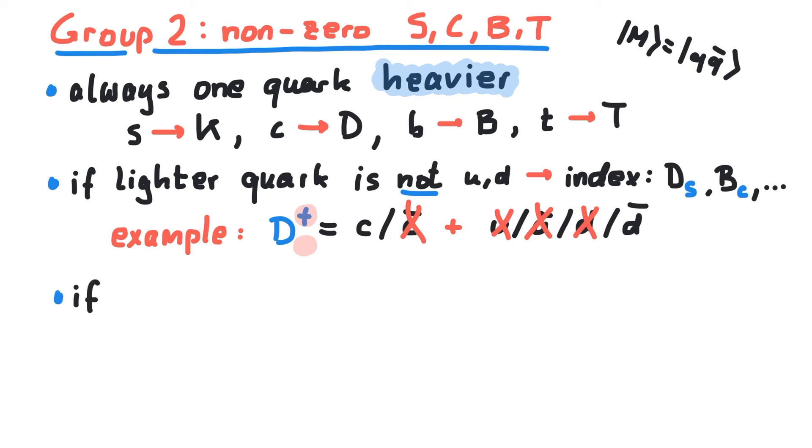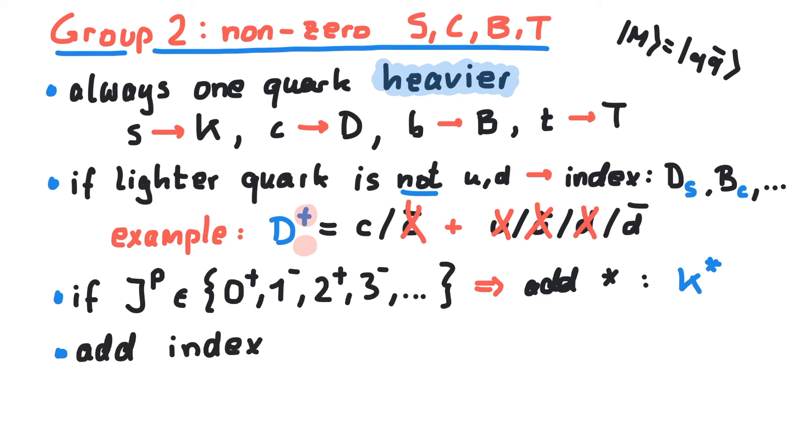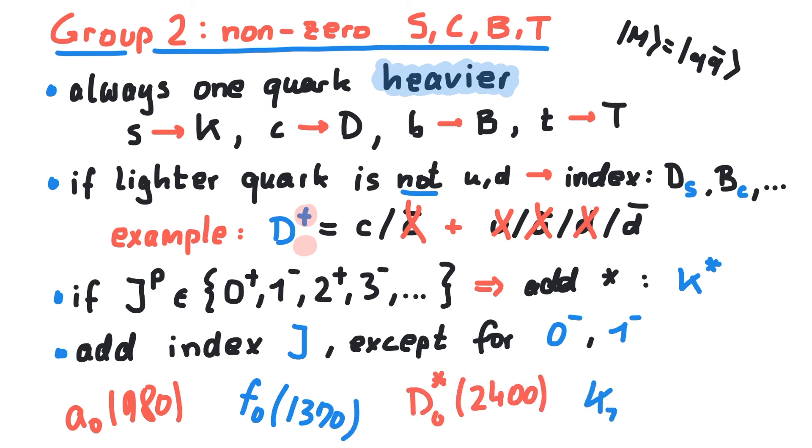There are two more special rules. If the JP structure is contained in this list here, then we add a star to the meson. And again, for the total angular momentum, we add an index, except for 0- and 1- states. Finally, we write the mass of the meson in MeV in brackets after the meson's name. This now completely determines the properties of the meson.